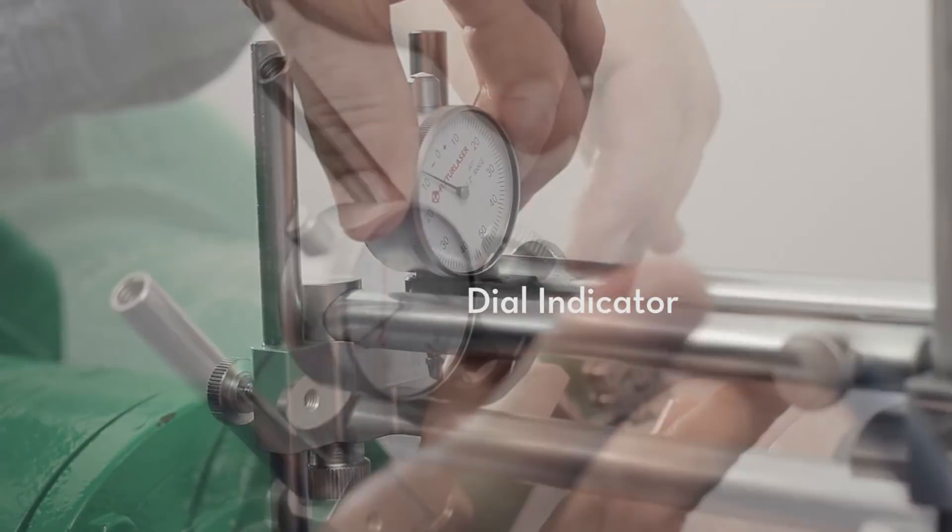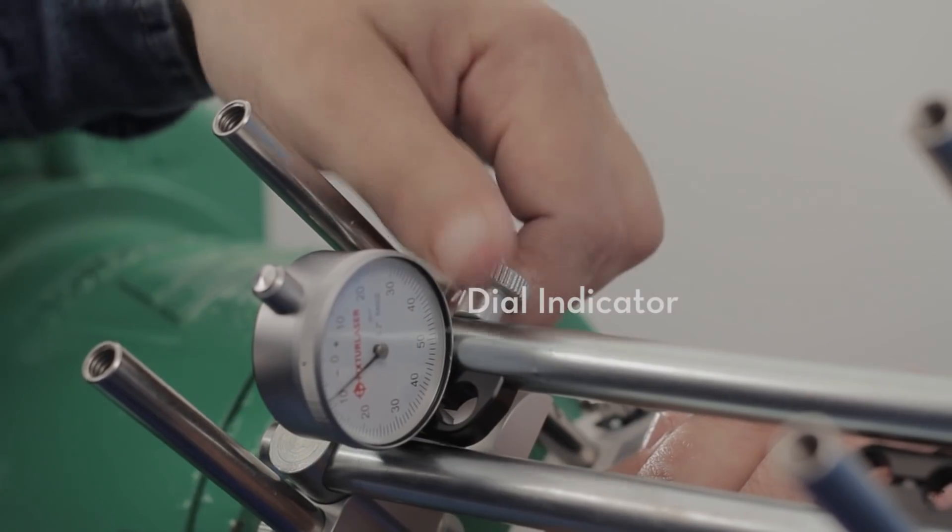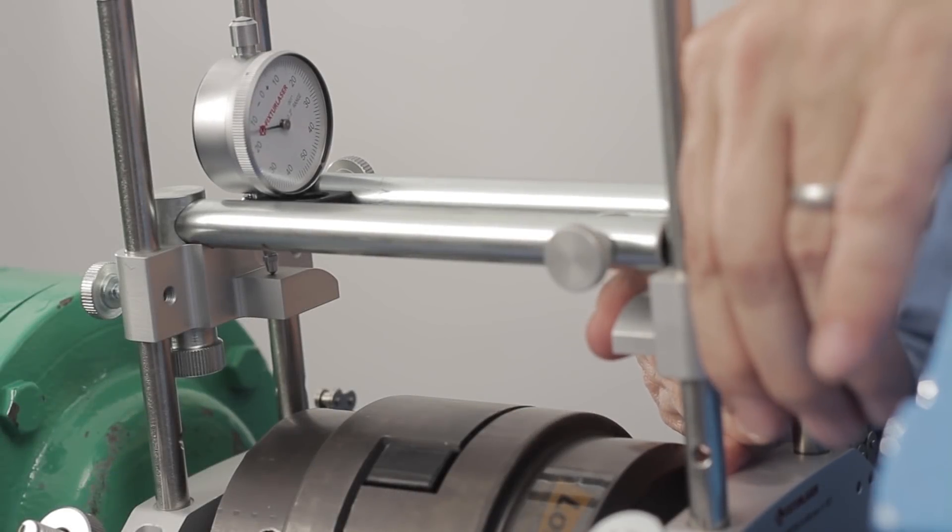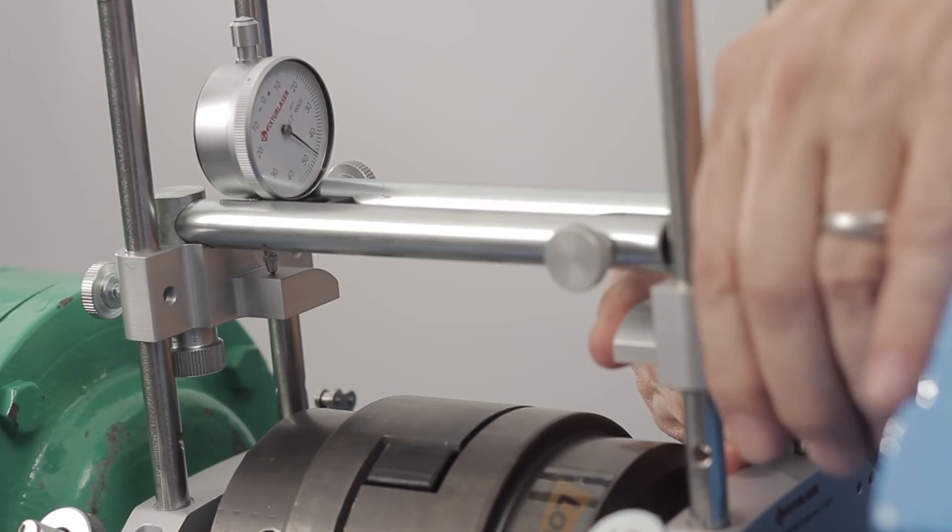Attach the first dial and tighten the clamp. Adjust the rod holder up or down until the dial is set to half travel.